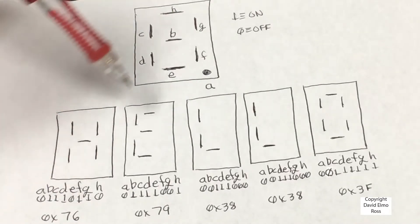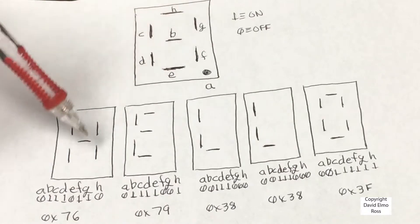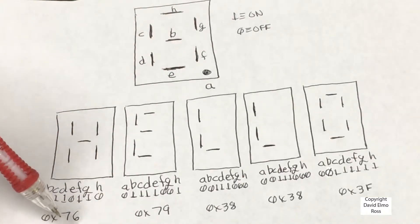but the E is off, and then F, G are on, but H is off. So that gives us a number of 76 here.